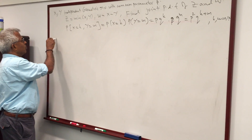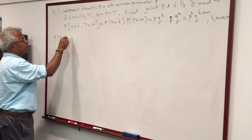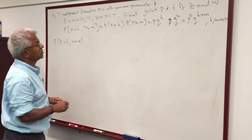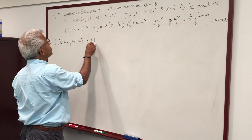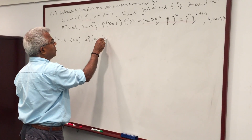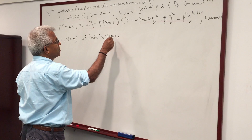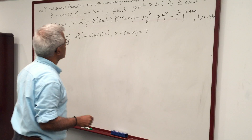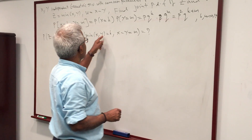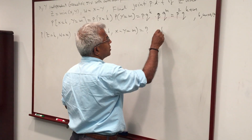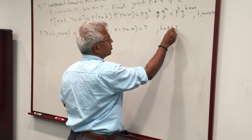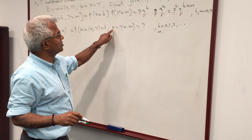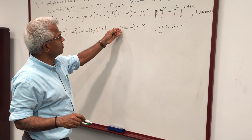What we want is the probability of Z equal to K and W equal to M, where Z is the minimum of X and Y, and W is X minus Y. Because X and Y are non-negative, K goes from 0, 1, 2, 3, etc. But M, which is X minus Y, can take 0 if X equals Y, can be positive if X is greater than Y, and can be negative if X is less than Y.